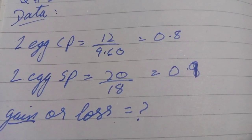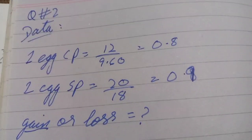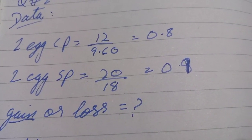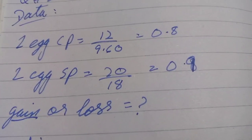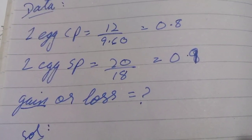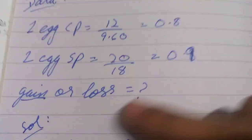For cost price per egg, 9.60 divided by 12 equals 0.8. For selling price per egg, 18 divided by 20 equals 0.9. This shows it is a gain.